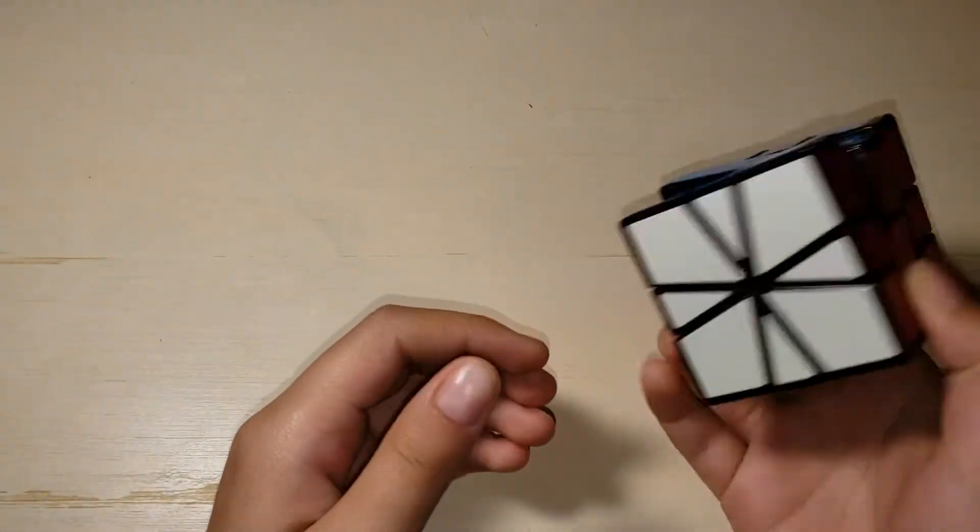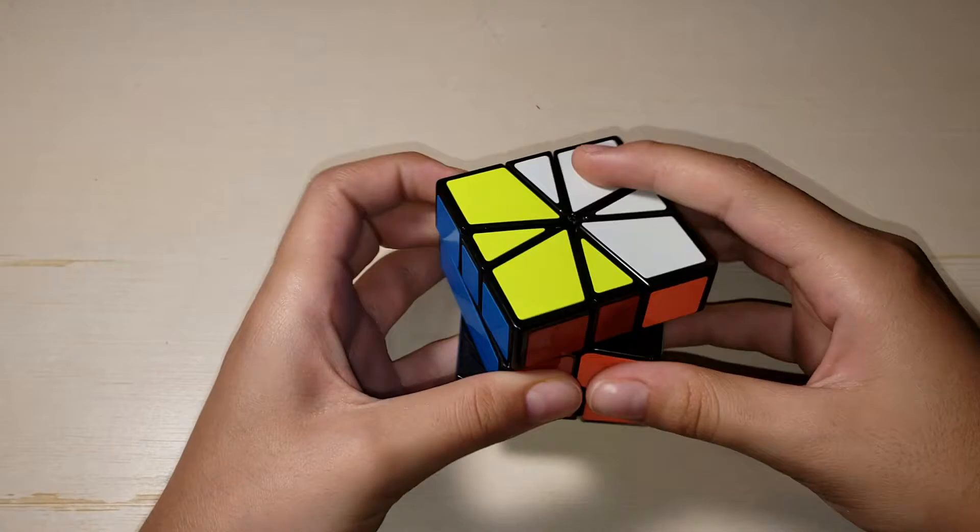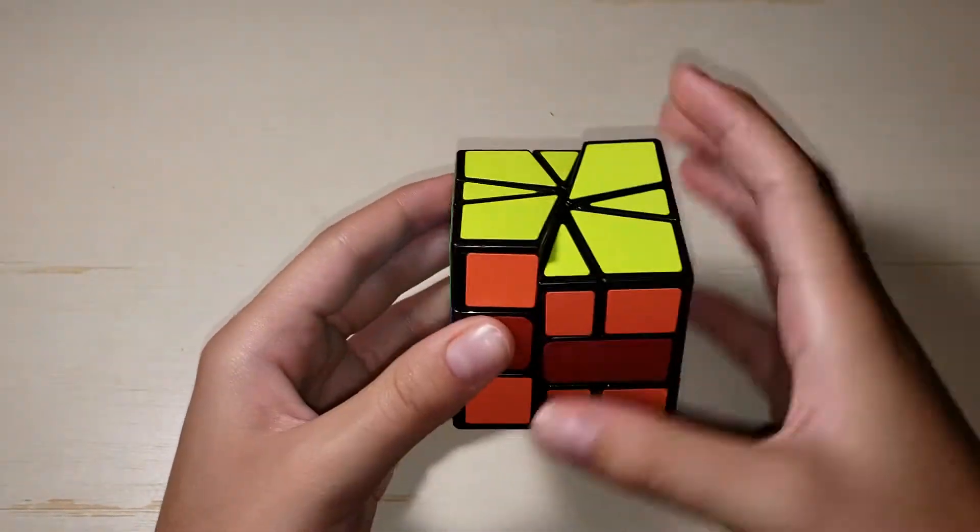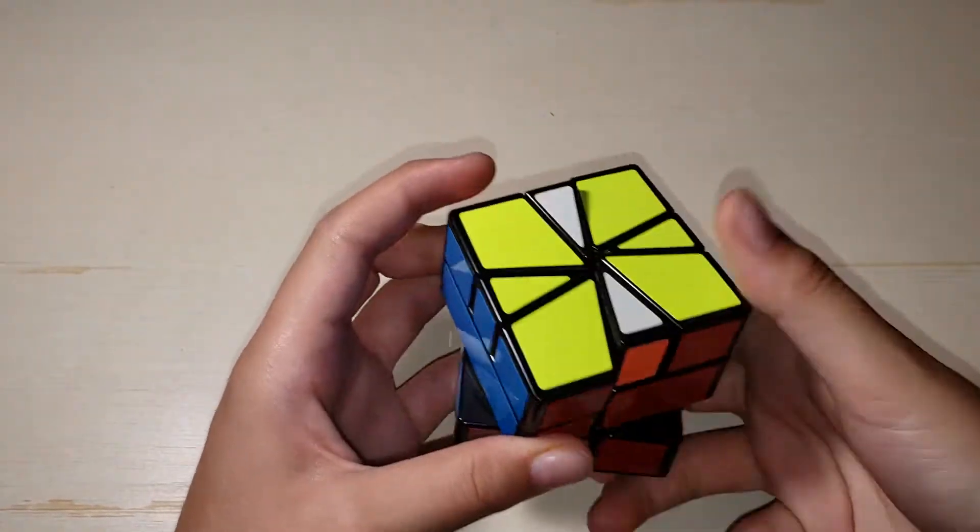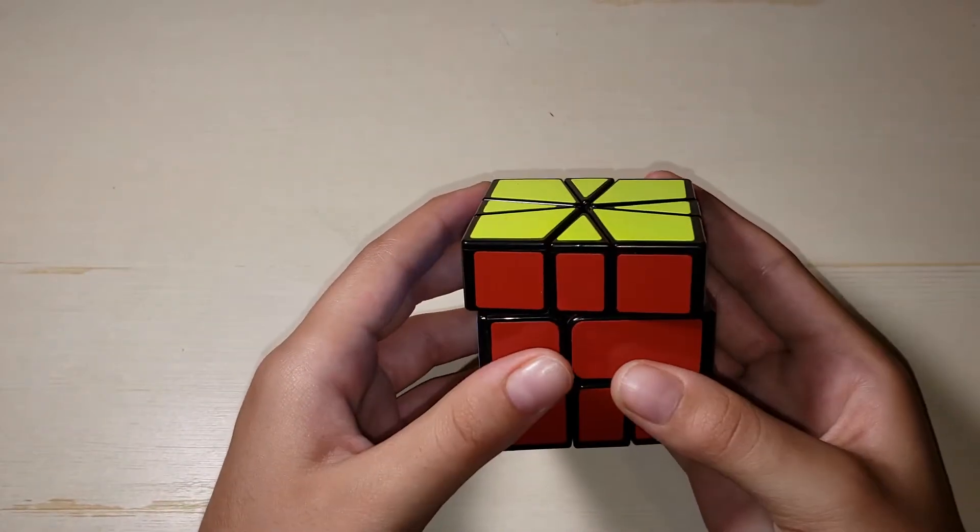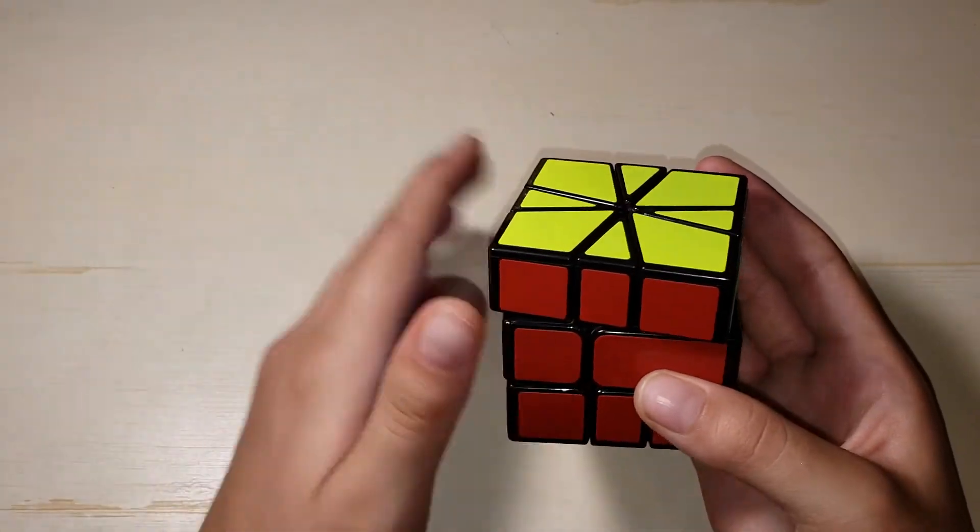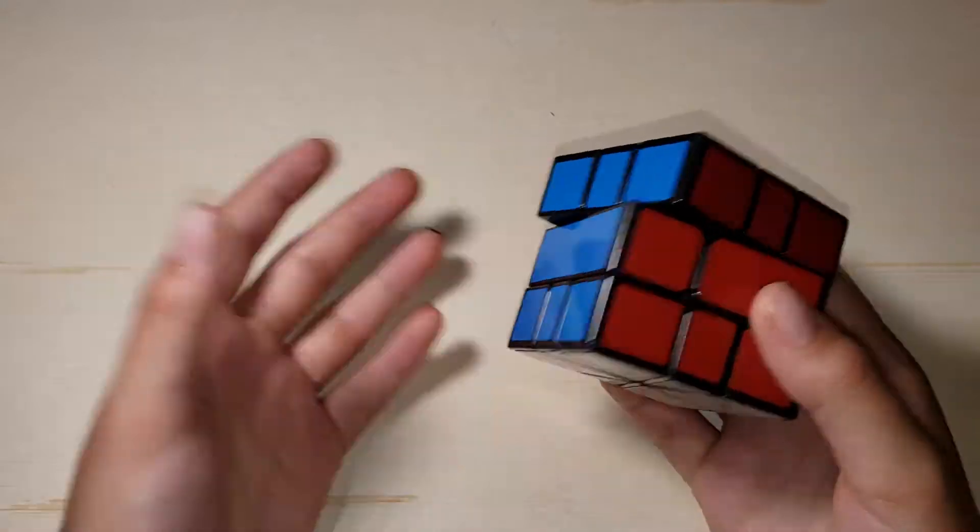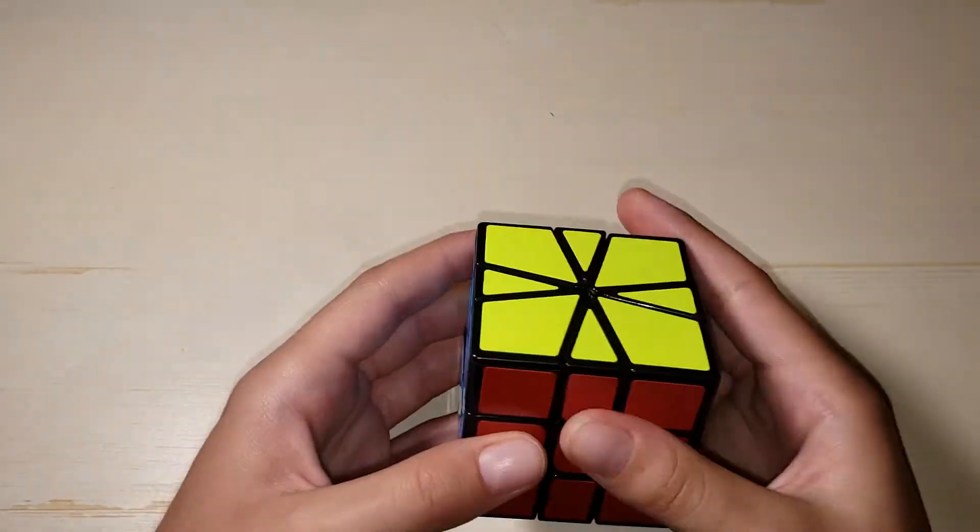Alright, next we're going to go over square one. I'm using the YJ Guanlong square one. So I was supposed to have a X-Men vault by this weekend. But I also pre-ordered something else. And that's back order right now. So, basically, I'm probably not going to get in time. So, I'll probably either use this or borrow someone else's.